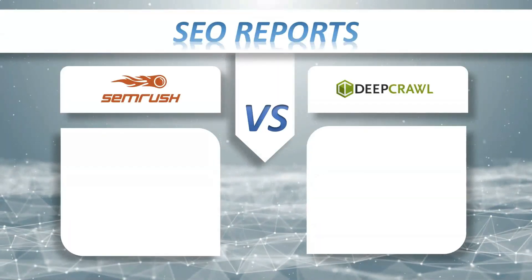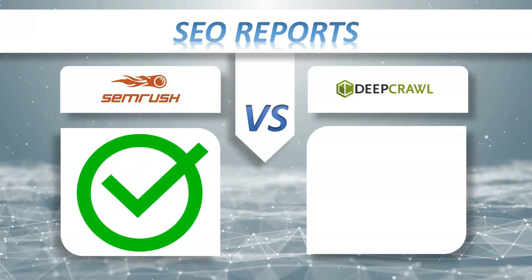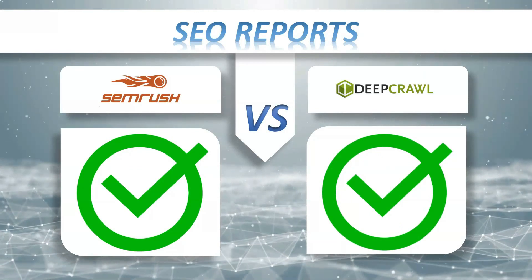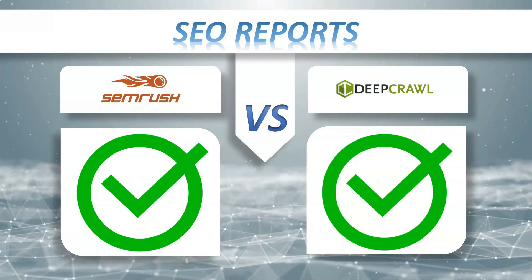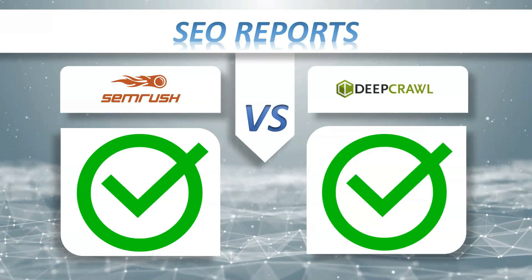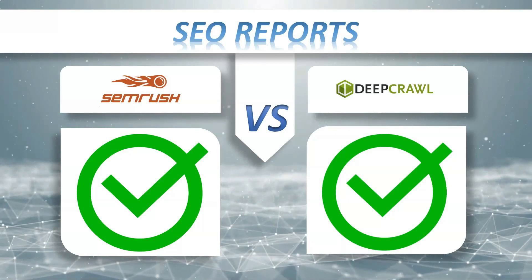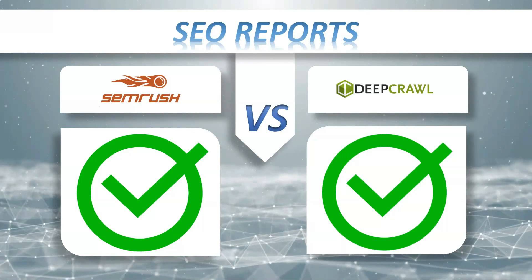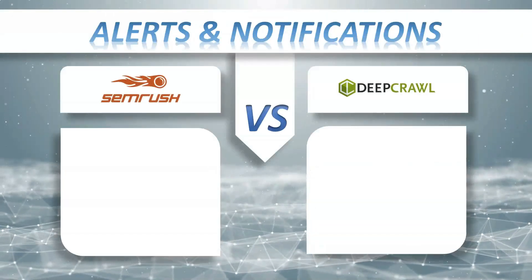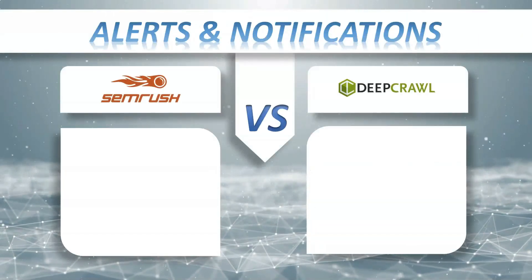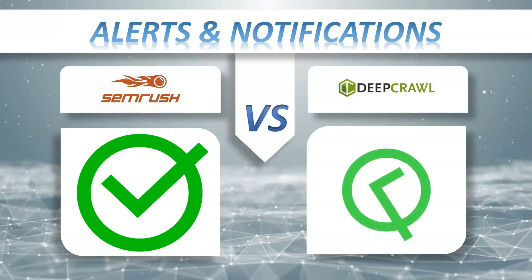SEO reports: SEMrush plus, DeepCrawl plus. You can schedule weekly technical SEO audits and your site audit tool will automatically start crawling your website, then you'll get a notification when it's finished in your inbox. Alerts and notifications: SEMrush has it, DeepCrawl also has it.